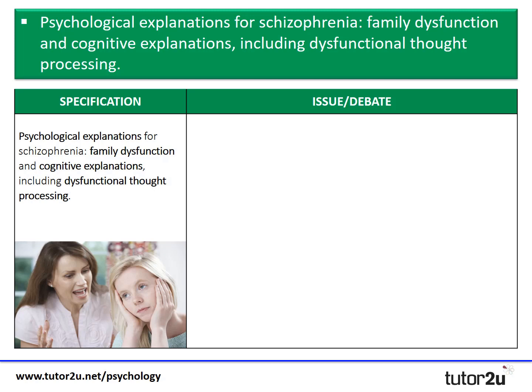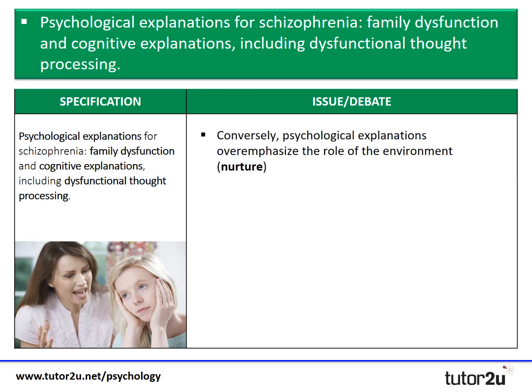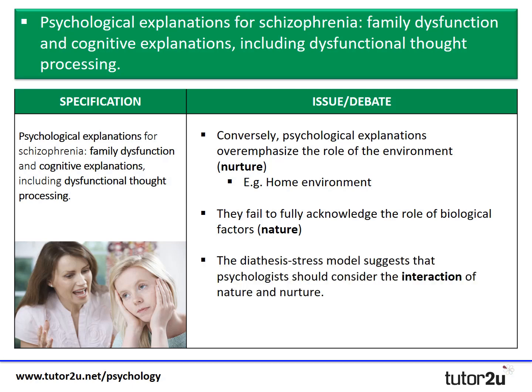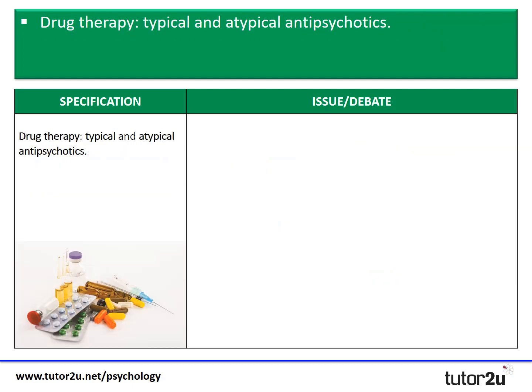Psychological explanations for schizophrenia — including family dysfunction theory and cognitive explanations — are also limited but in the opposite way: they overemphasize the role of the environment (nurture) and fail to fully consider the role of biological factors. As mentioned, the diathesis-stress model clearly suggests schizophrenia results from an interaction between both factors, so psychological explanations are limited in the reverse way to biological ones.